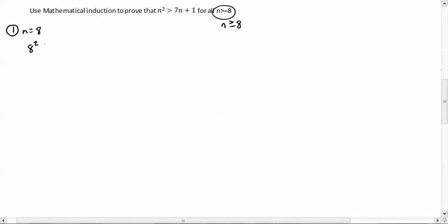So we're going to go 8 squared is greater than 7 times 8 plus 1. And so 8 squared is 64 and this is 56 plus 1. So 64 is greater than 57. Alright, so it works for the first one.